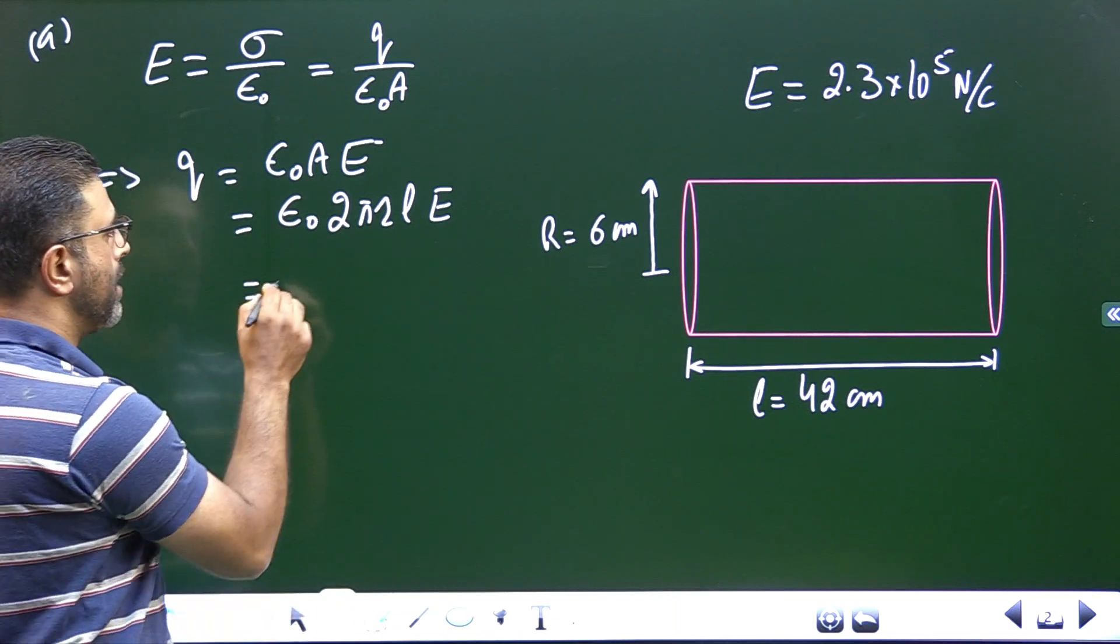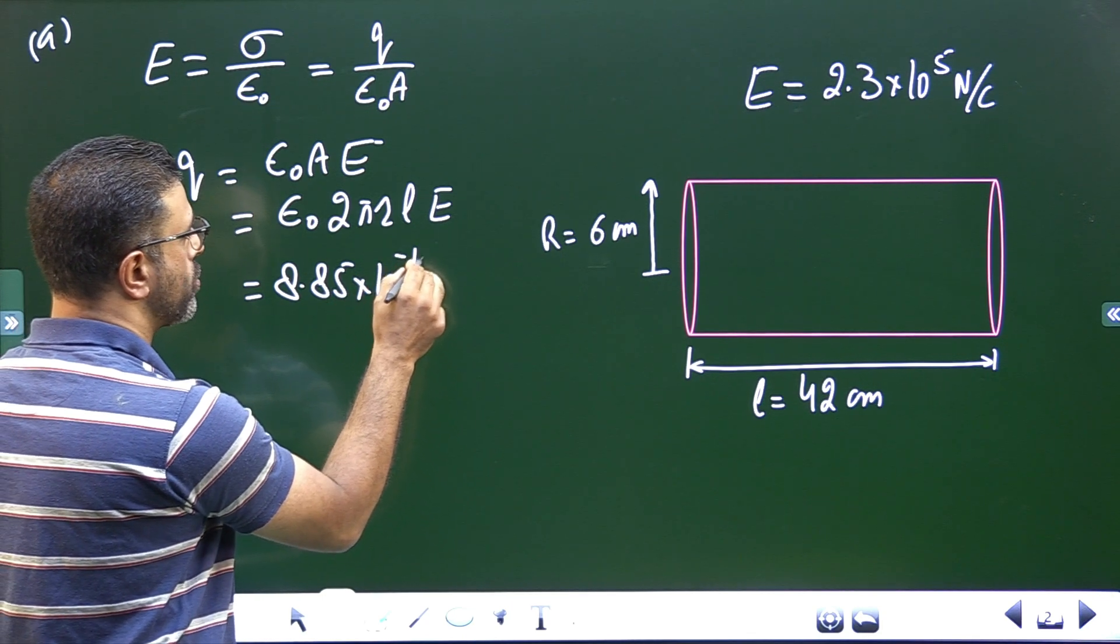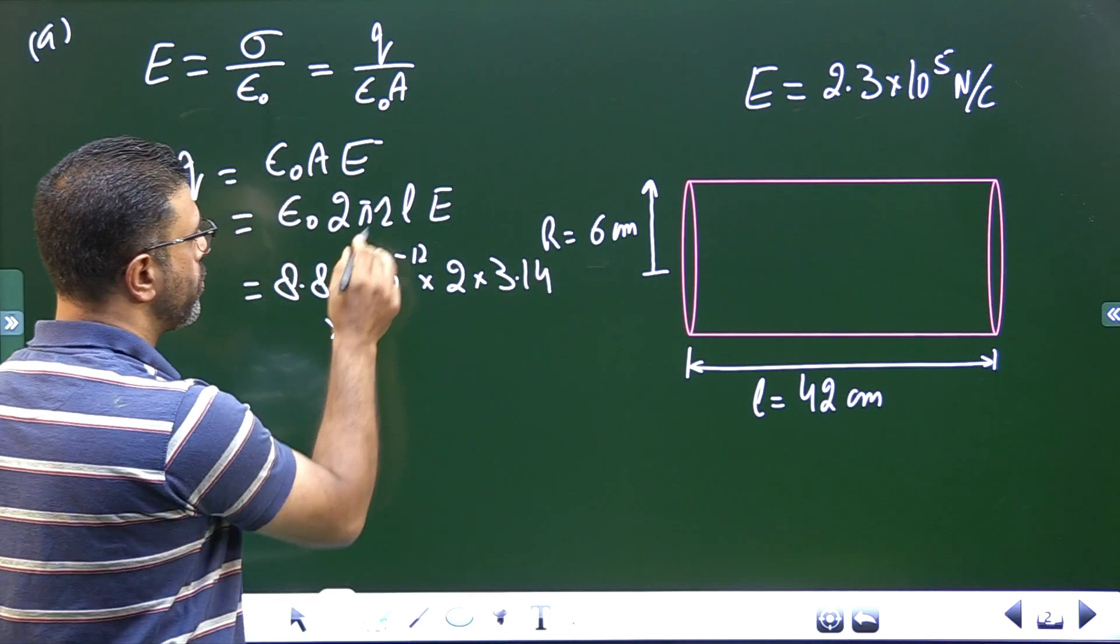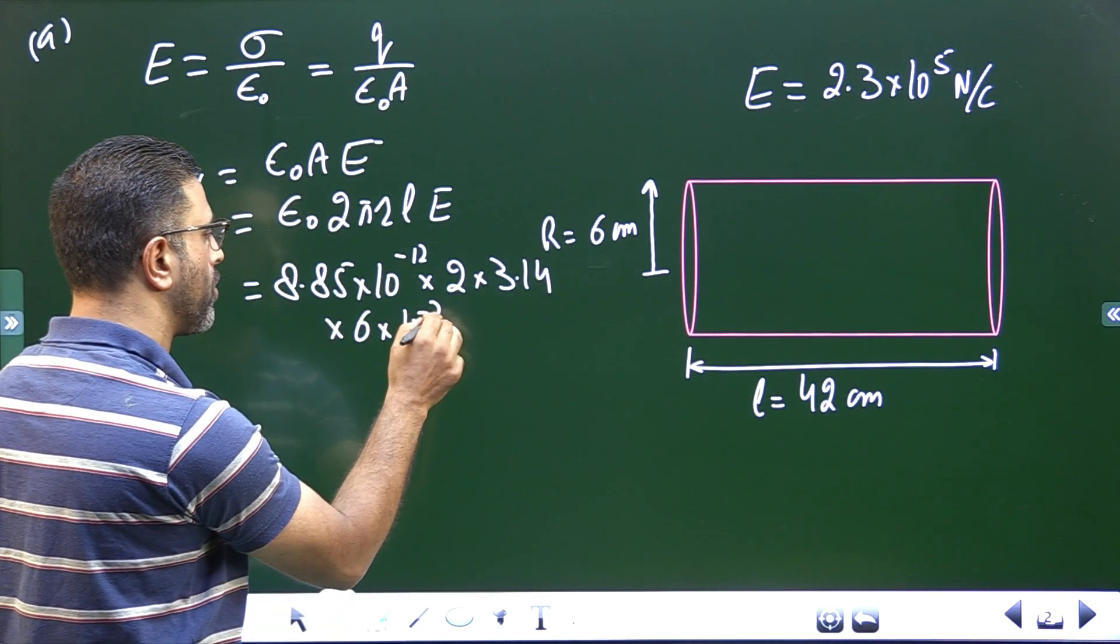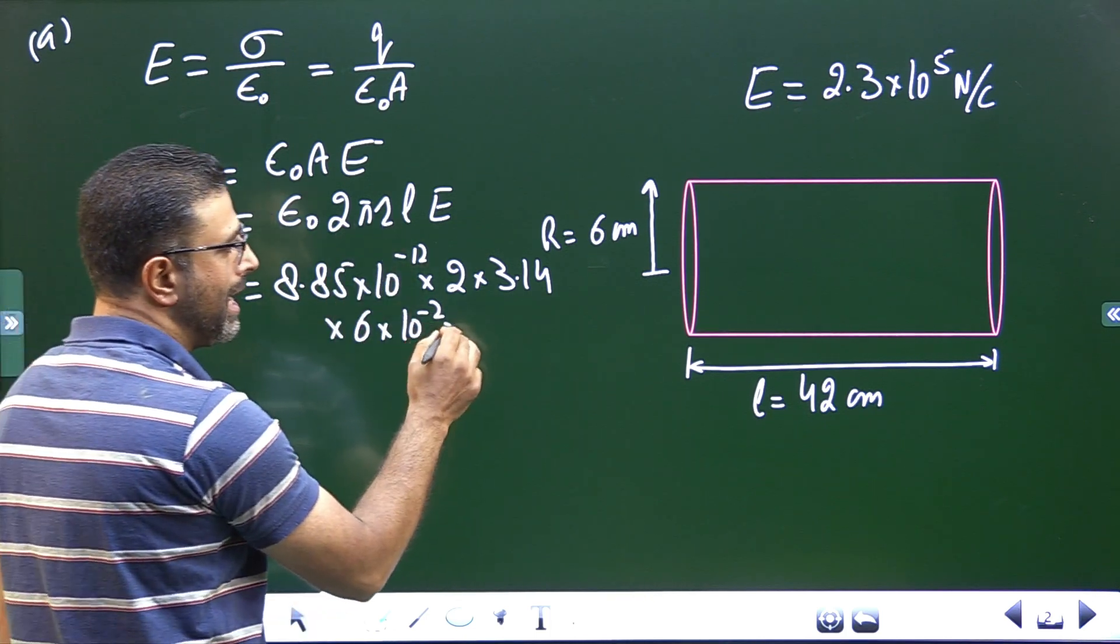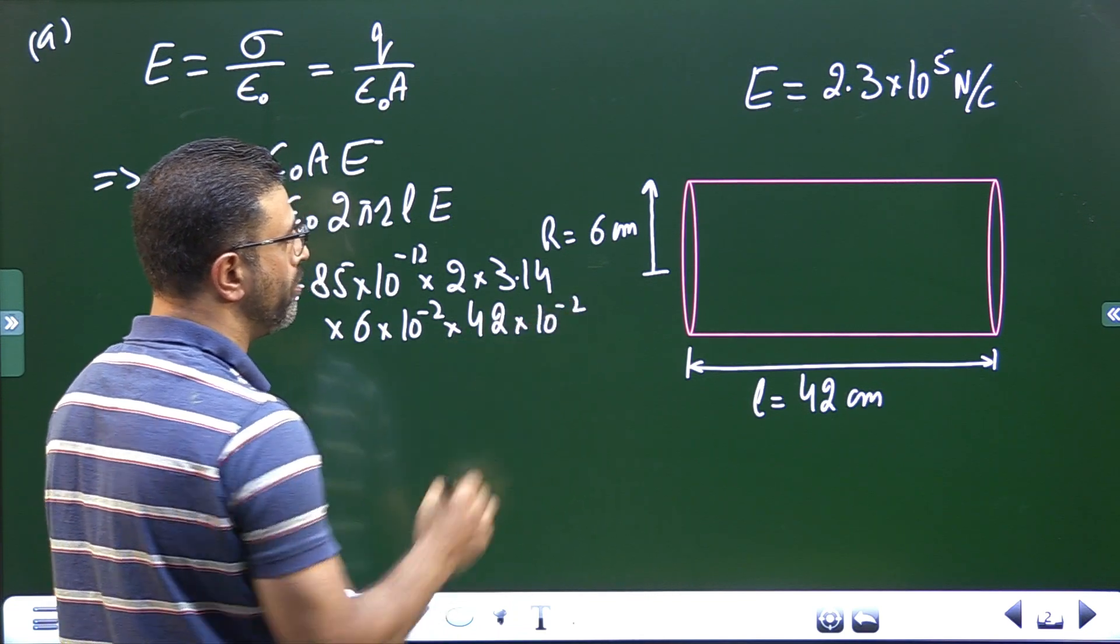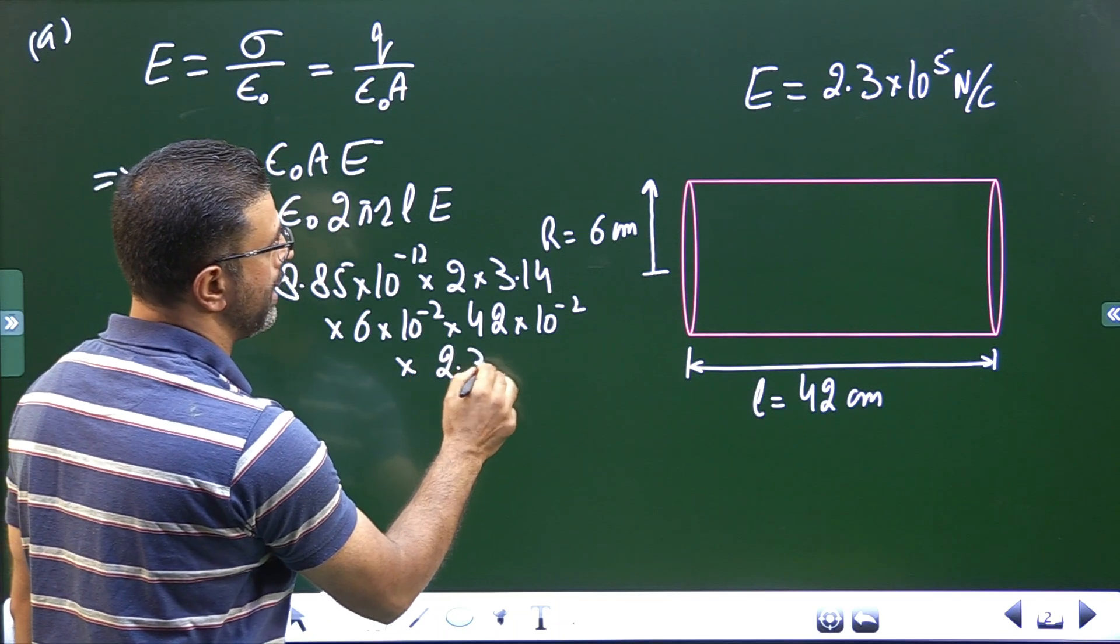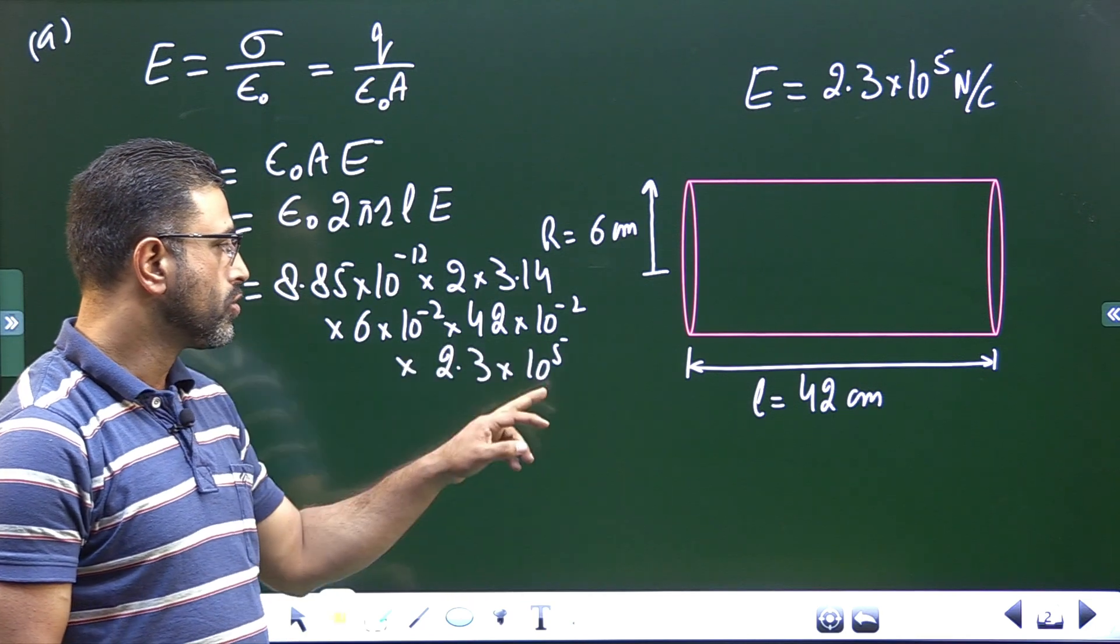So ε₀ is 8.85 × 10^-12 × 2 × π is 3.14 × R, our radius is 6 centimeters so 6 × 10^-2 meters, we'll convert it to SI system. Length is 42 centimeters, 42 × 10^-2 meters, and then electric field is 2.3 × 10^5 Newton per Coulomb, that's already in SI system.